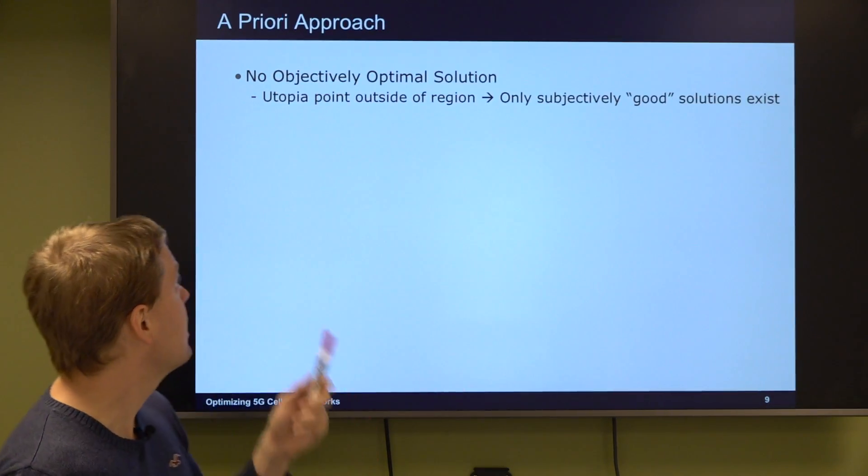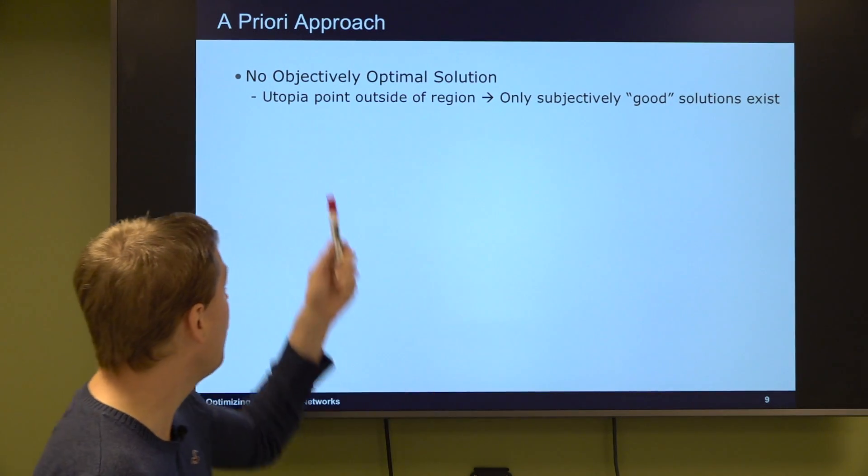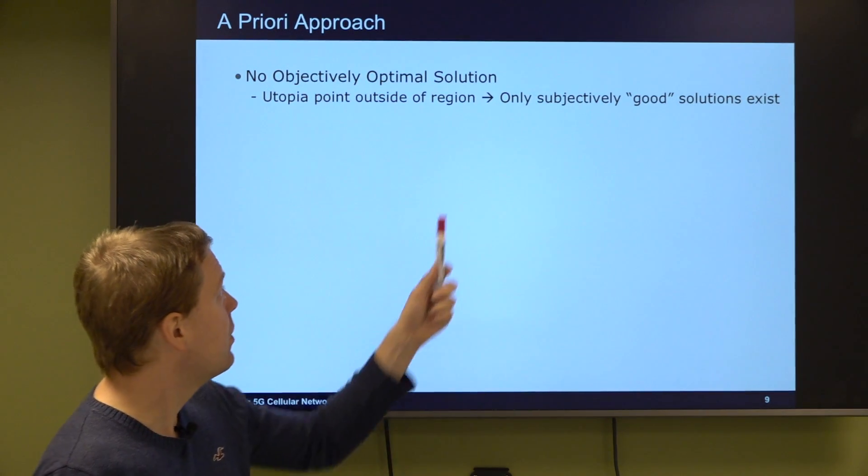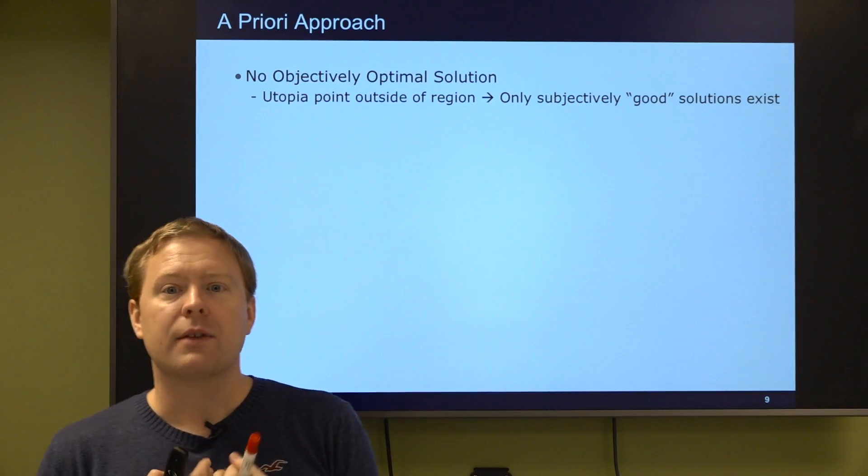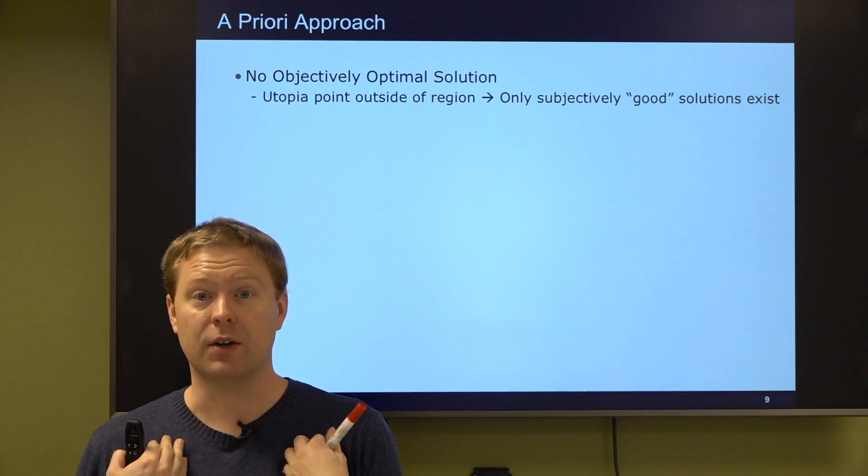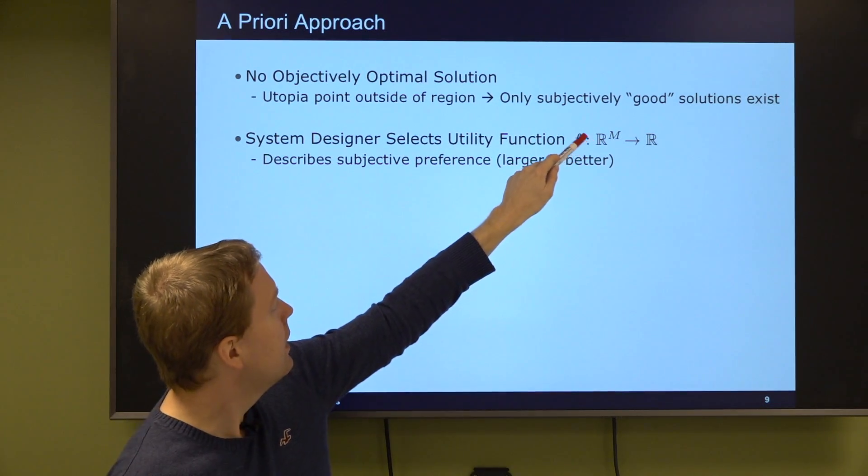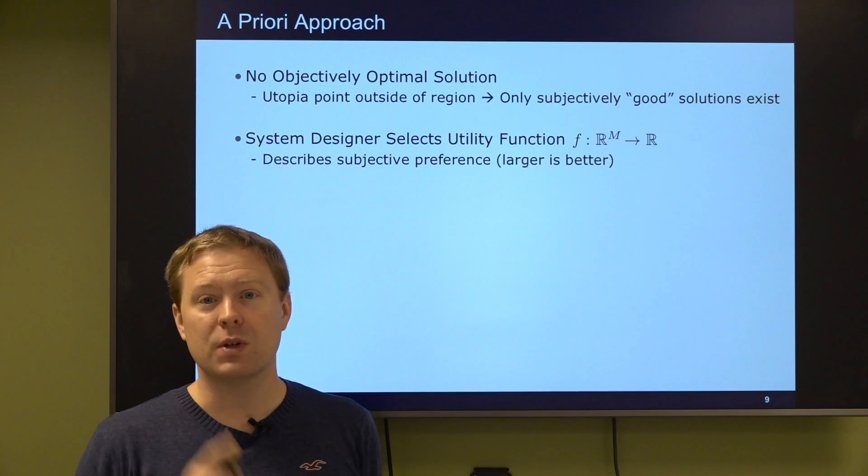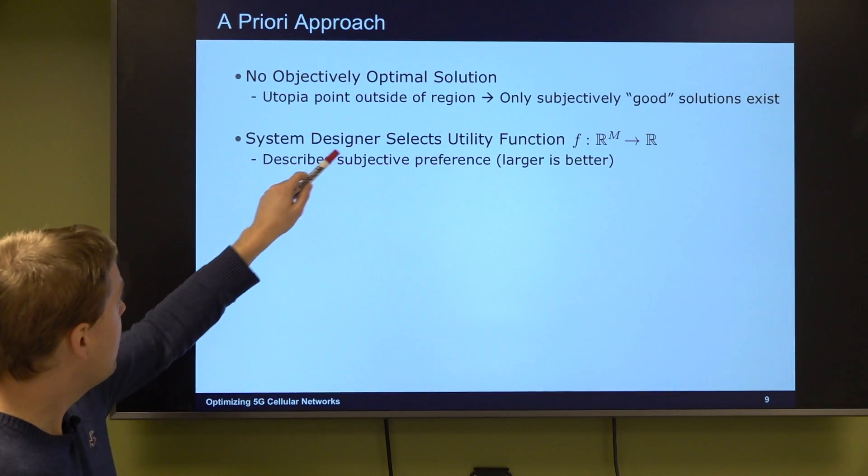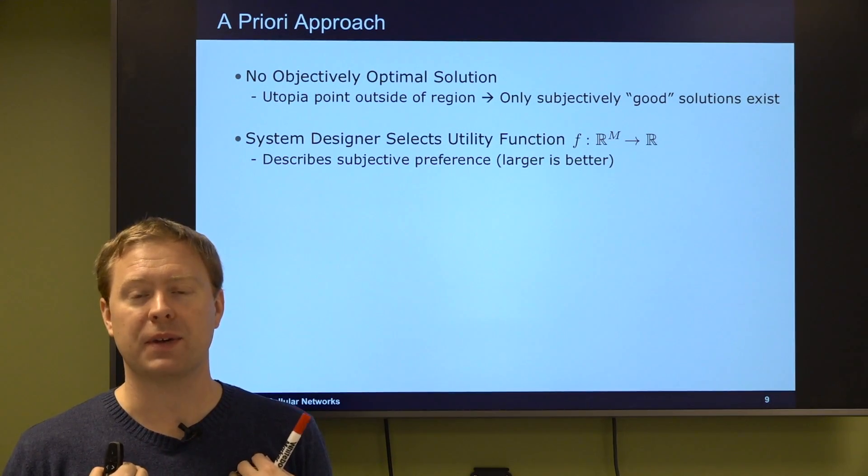The other approach is called the a priori approach. We know that no objectively optimal solution exists, only subjective ones. This happens whenever the utopia point is outside the region. So we would like to find some kind of subjective but good solution. If I'm a network designer I might have an opinion of what is good. So I can select a utility function that takes all of the metric values, the m of them, and maps it to a scalar number that says how satisfied I'm going to be with different metrics. This describes my subjective preference.